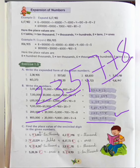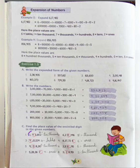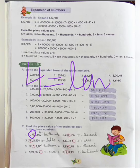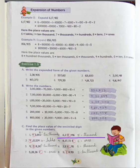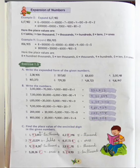In the same way, you can write this also. Now exercise C. Find the place value of the encircled digit in the given numbers. Here we have to write the place value. The circled number is 4, and 4 is in the 10,000's place, so we write 10,000. In the same way, the second encircled number is 8, and 8 is in the 1,000's place, so we write 8 is equal to 1,000. You can see all the remaining answers.